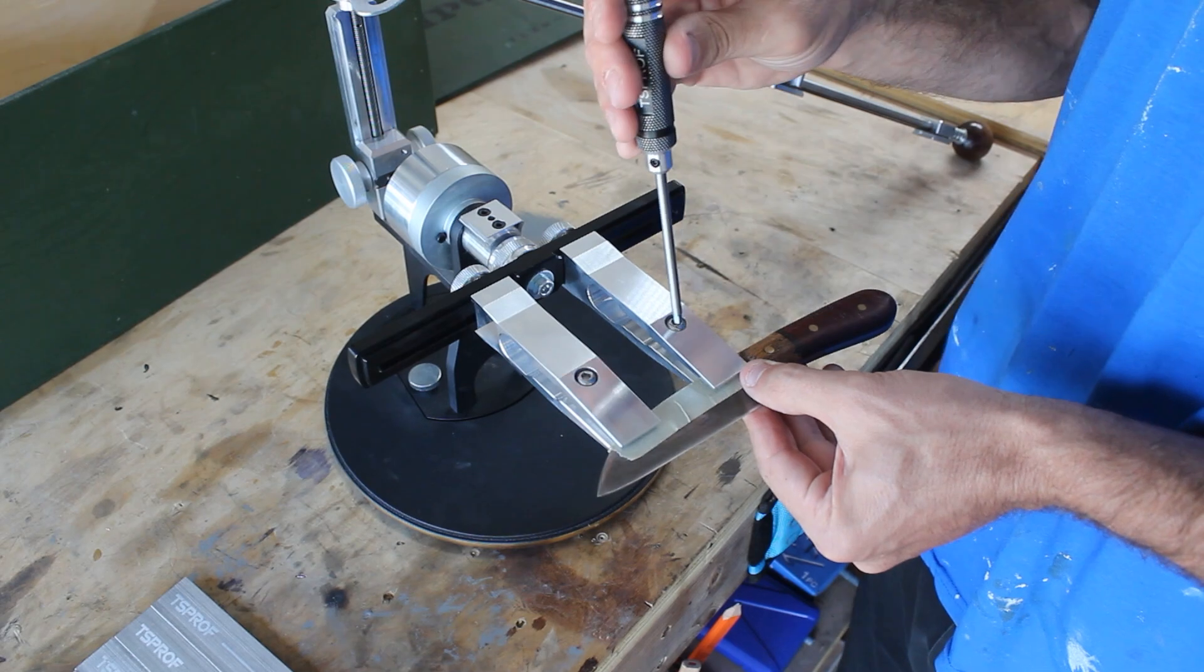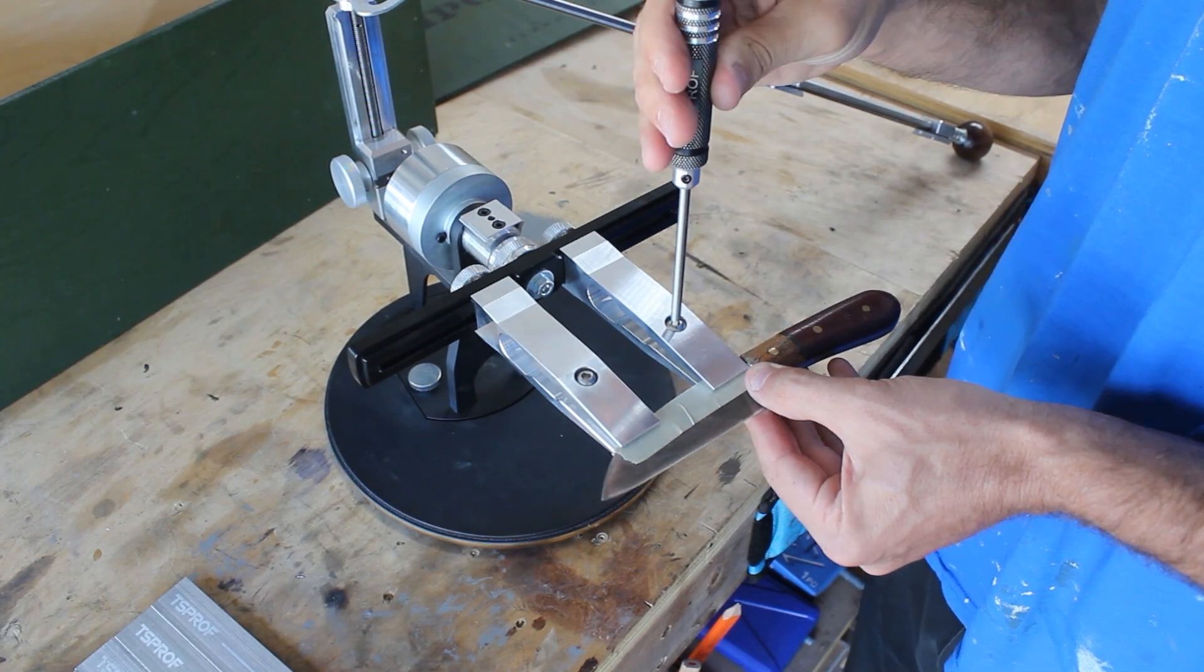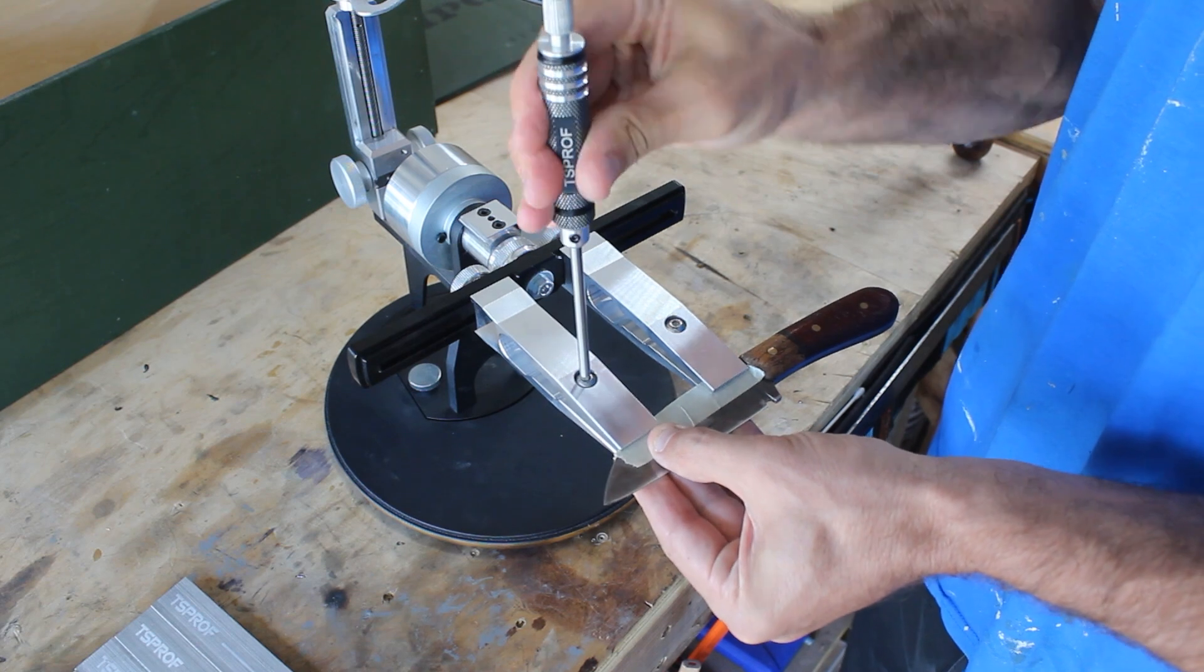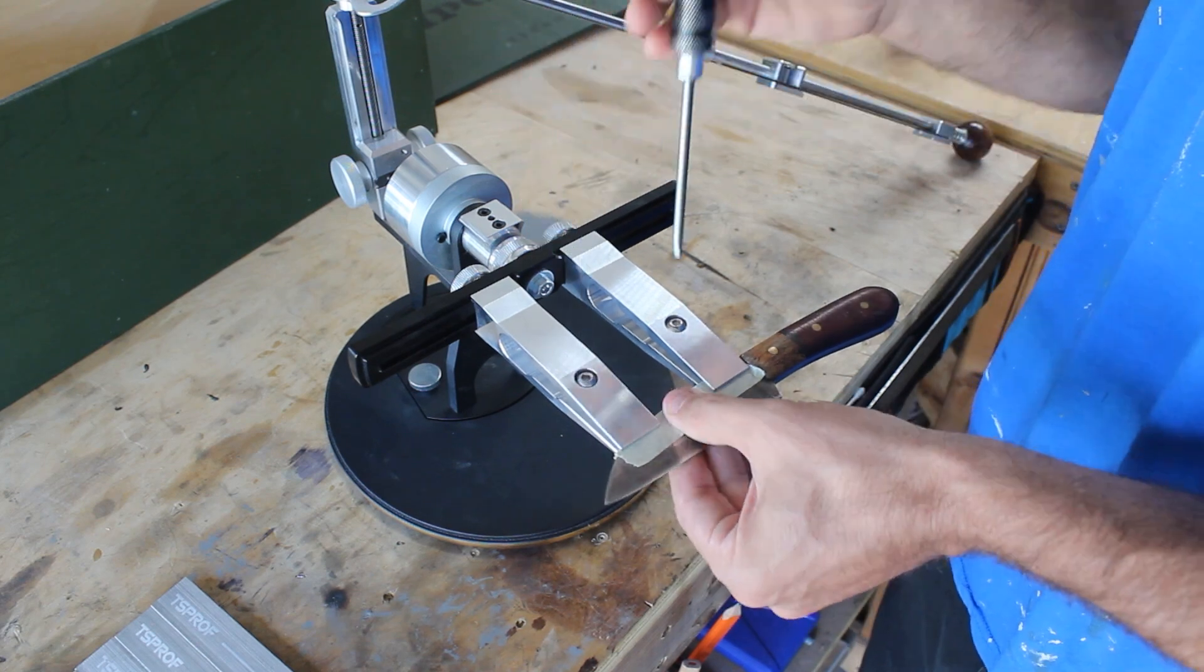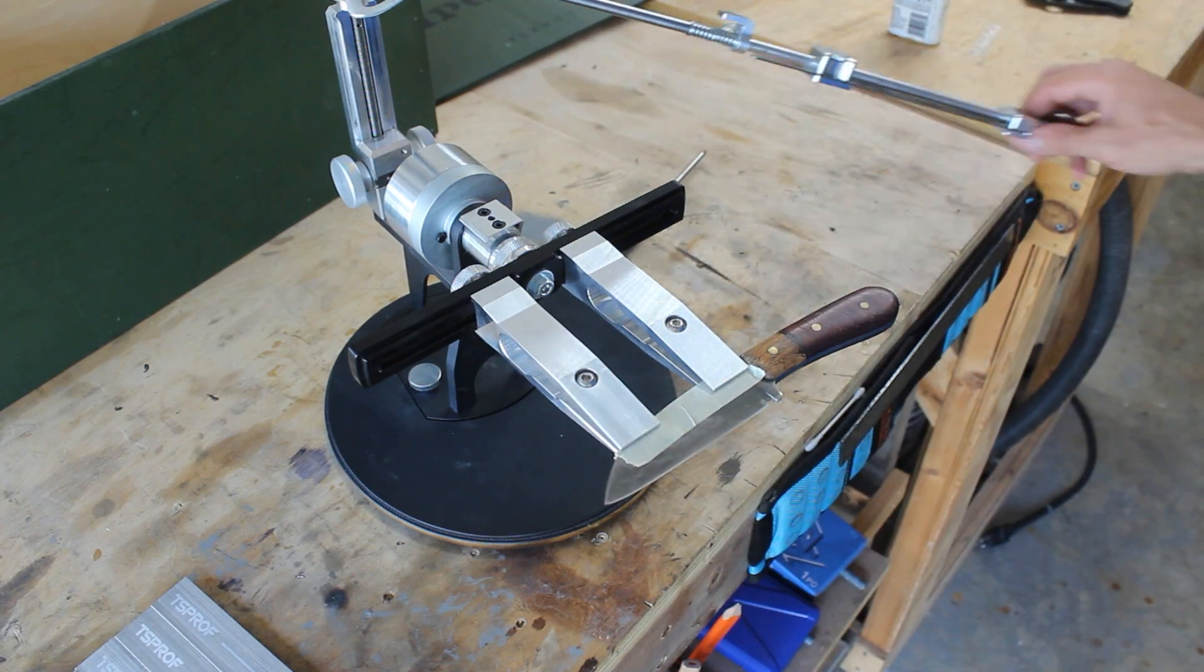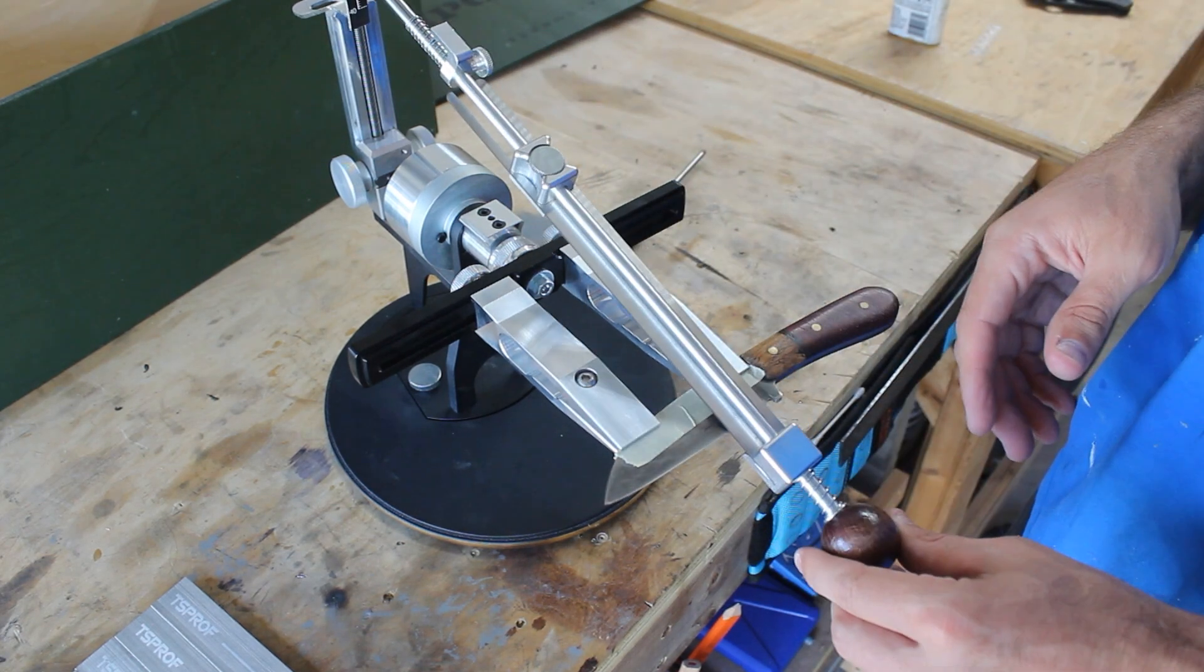So I went ahead and put some tape over the blade to prevent these clamps from scratching the blade, which is one of the potential things that you may find annoying is that you have to protect your blades from these clamps from scratching unless it's an old worn out knife. And then obviously you're not going to be worried about it.